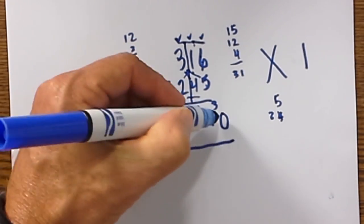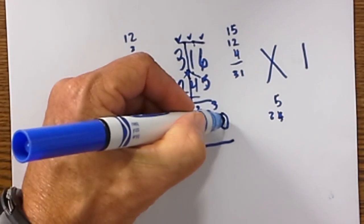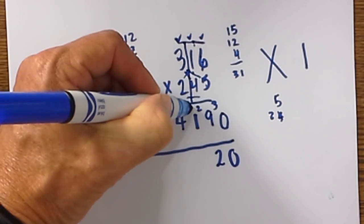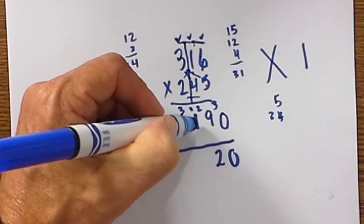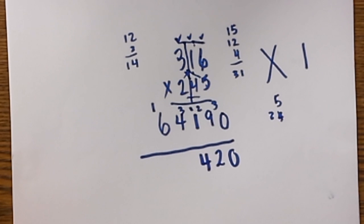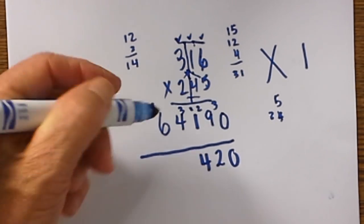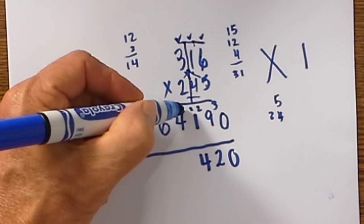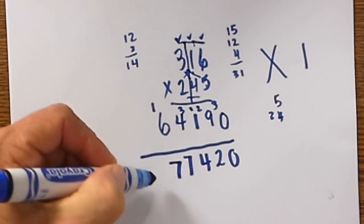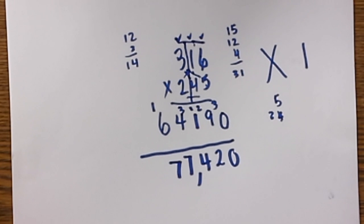So now all we do is move the numbers straight down. There is a 0, 9 plus 3 is 12, carry one more digit over, 1 plus 1 is 2 plus 2 is 4. Then we move 4 plus 3 is 7, 6 plus 1 is 7, so that is our answer: 77,420.